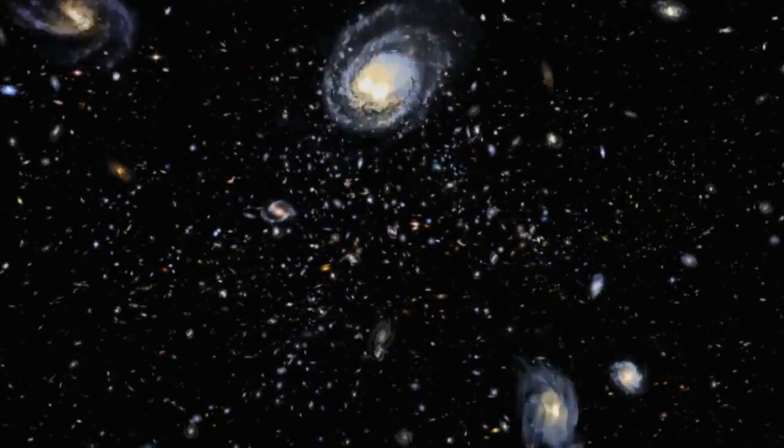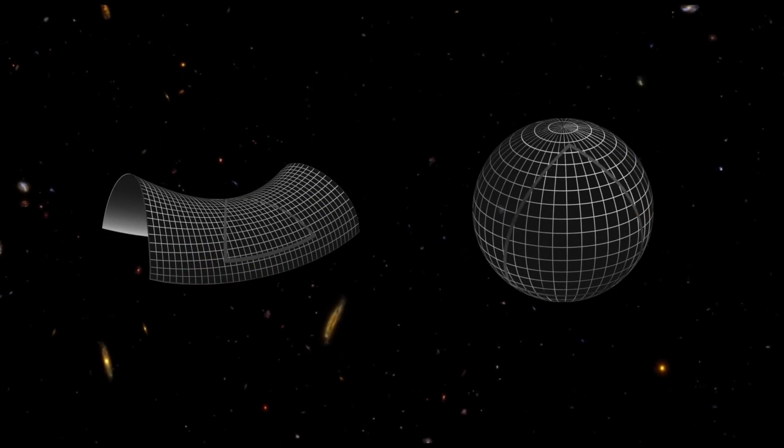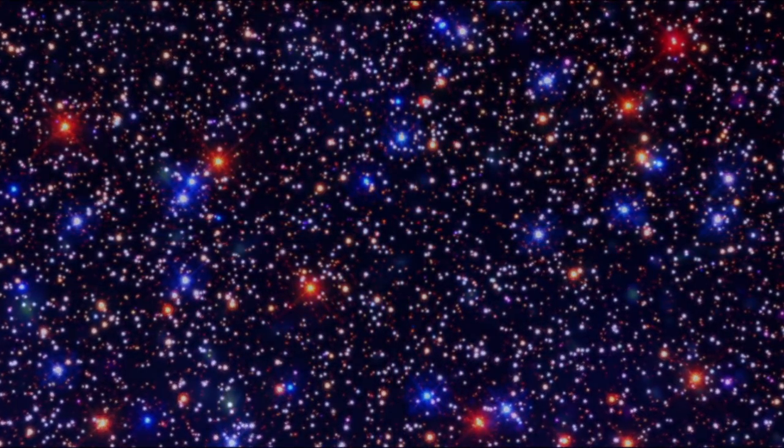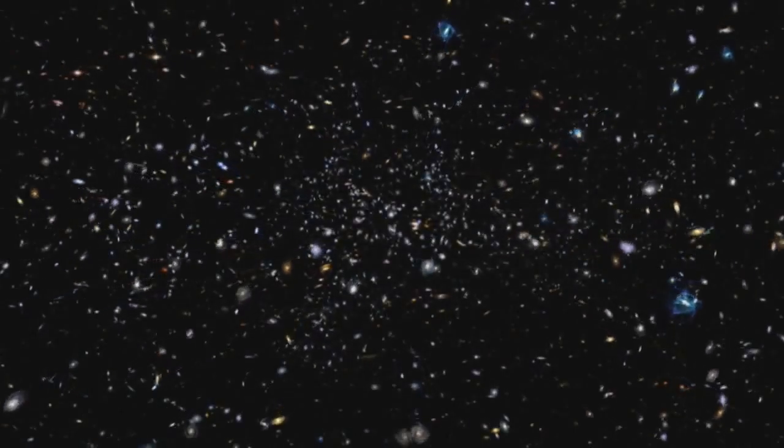Our universe has some peculiar properties that couldn't be explained by conventional Big Bang theory. For example, it's flat, meaning it's at just the right mass density that it'll neither expand forever nor collapse back on itself. Why should it be flat? And completely opposite sides of the universe that haven't had time to interact are at the same temperature. These were two of the biggest questions in cosmology. It wasn't until the 1980s with the theory of cosmic inflation proposed by Alan Guth that we found some answers. Inflation took us back to the beginning of the universe and with exotic physics like repulsive gravity and false vacuums, answered the why and what of the Big Bang.